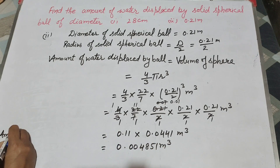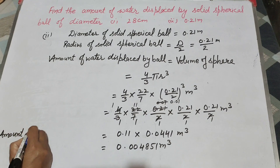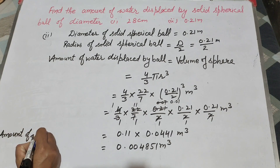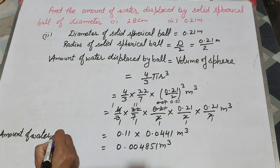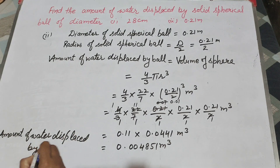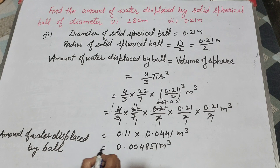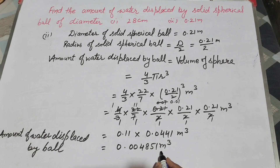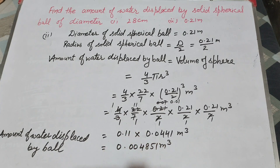So this is the amount of water displaced by the ball whose diameter is 0.21 meters — it is 0.004851 meters cubed. Thanks for watching! Please like, comment, and share my video, and subscribe to my YouTube channel.